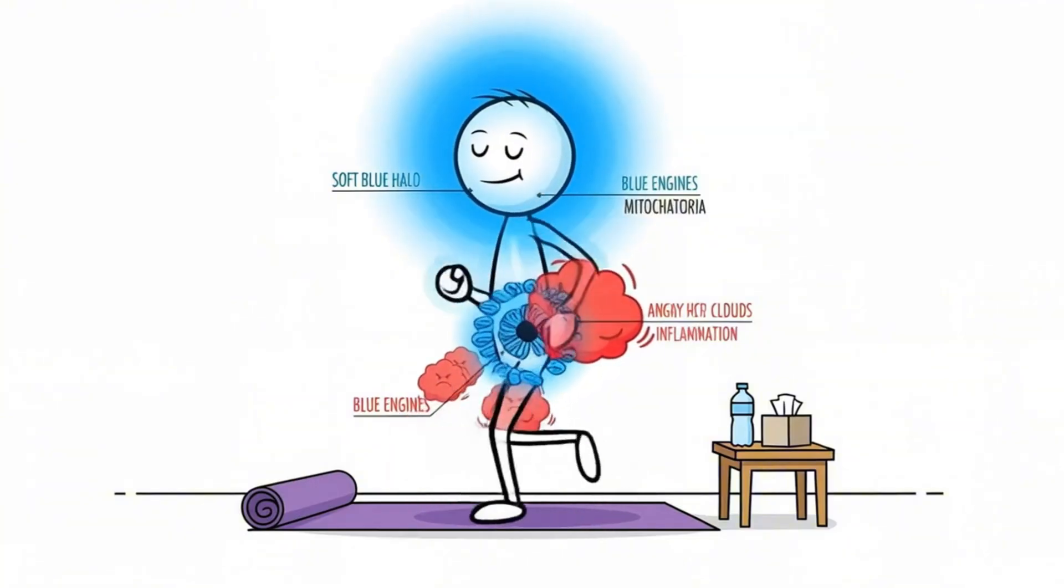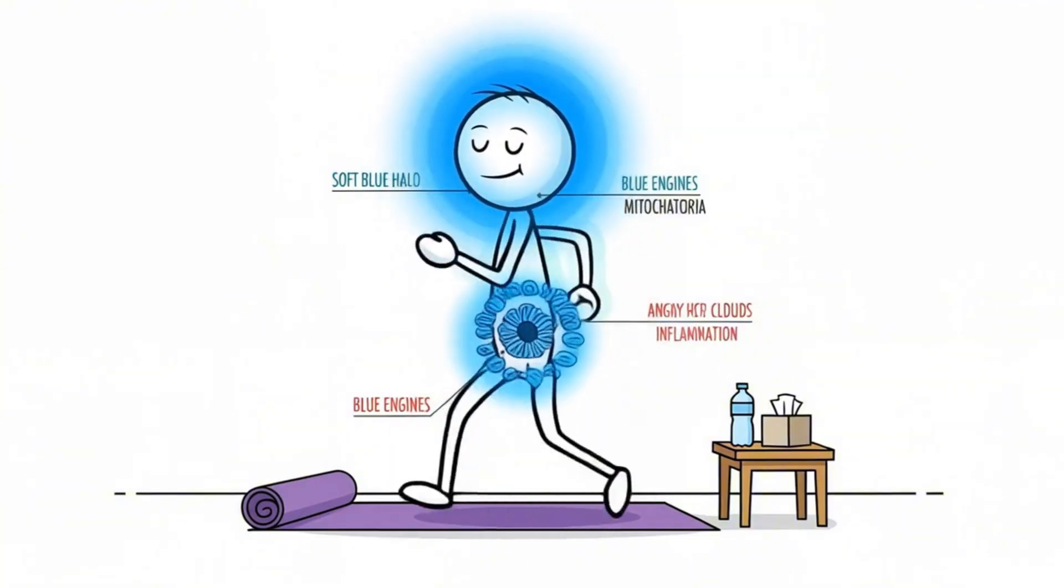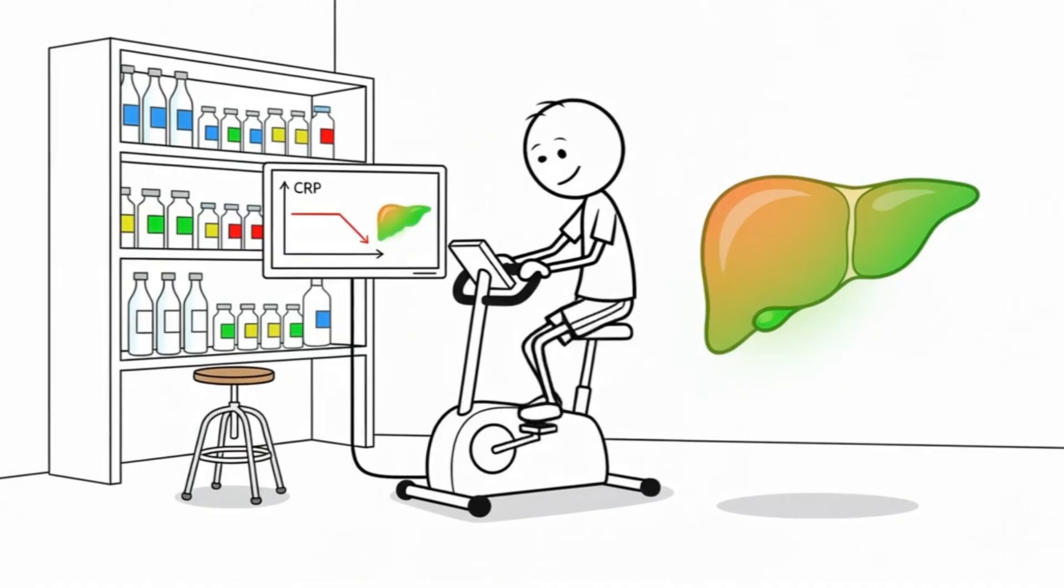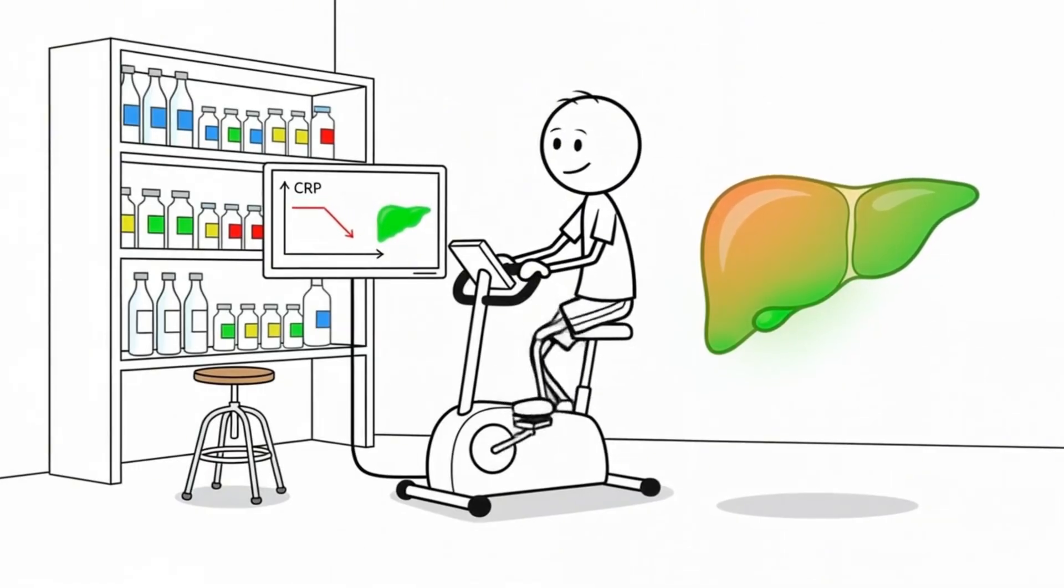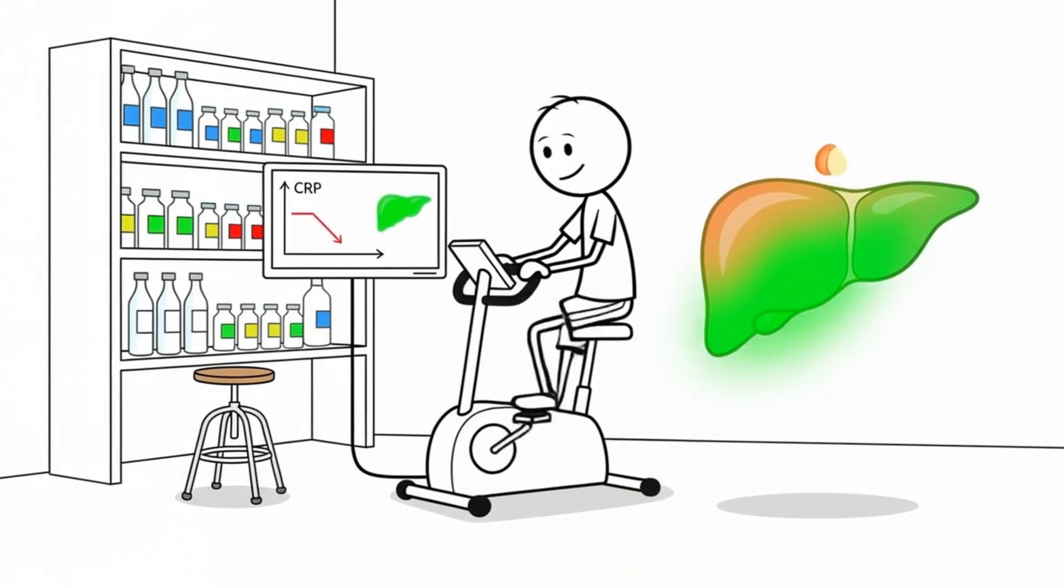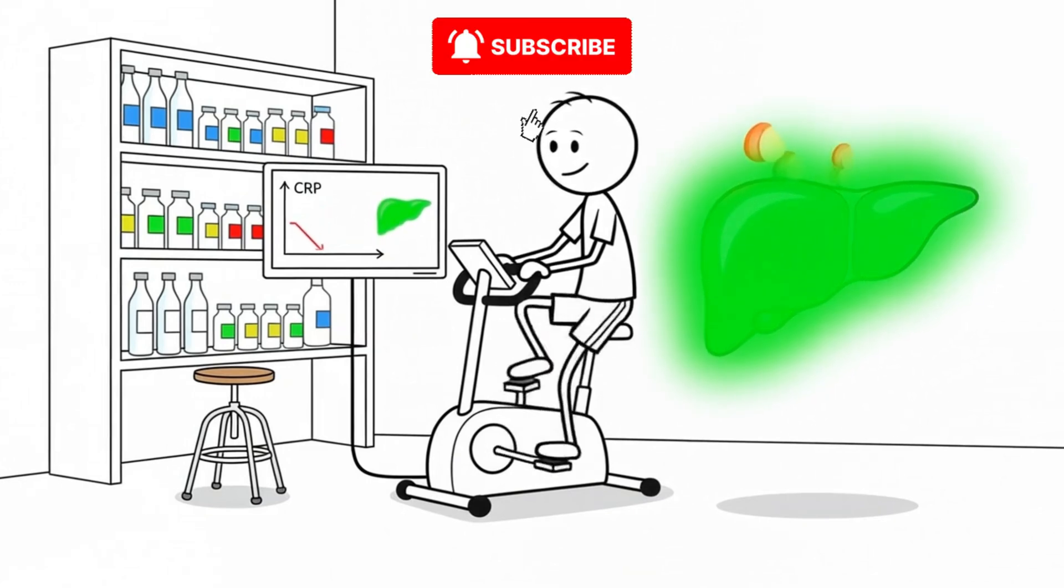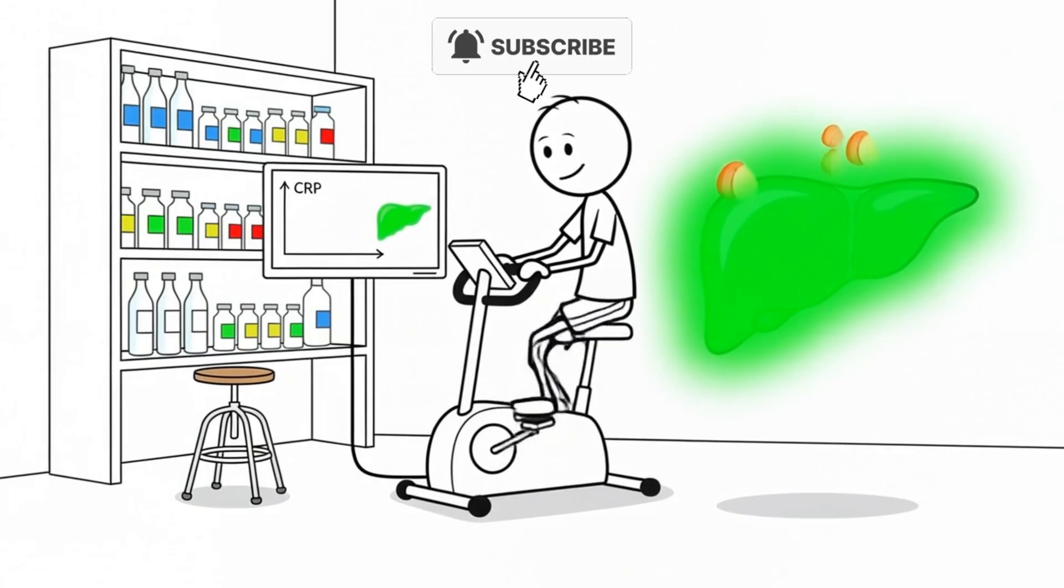Visceral fat also responds to reductions in chronic inflammation. Studies show that consistent, low-intensity exercise lowers inflammatory markers like CRP and improves liver fat metabolism, two key factors linked to visceral fat accumulation.